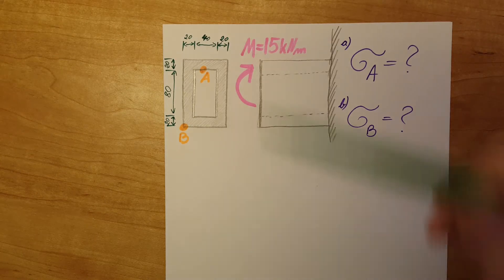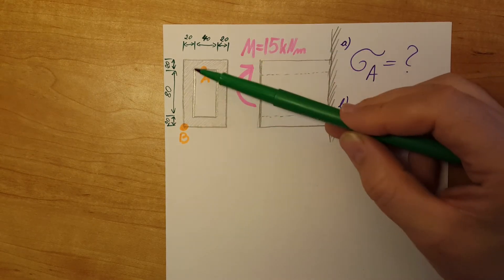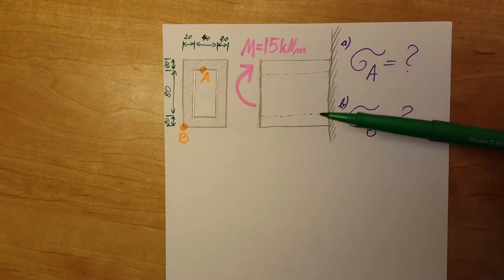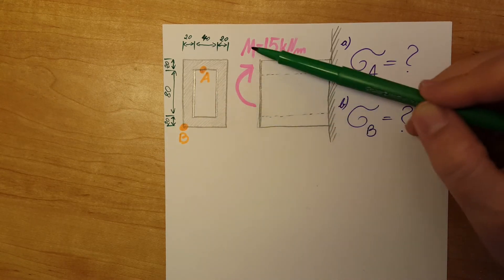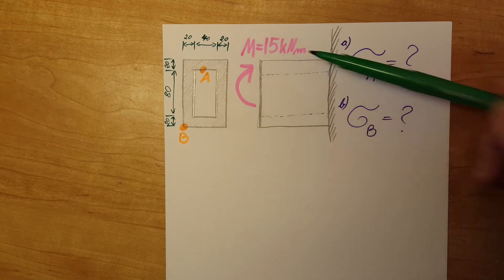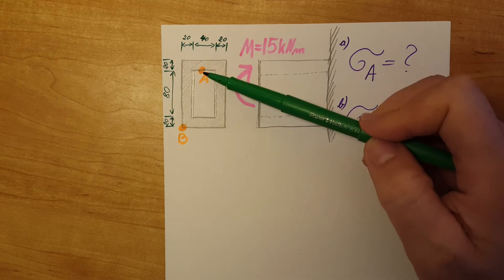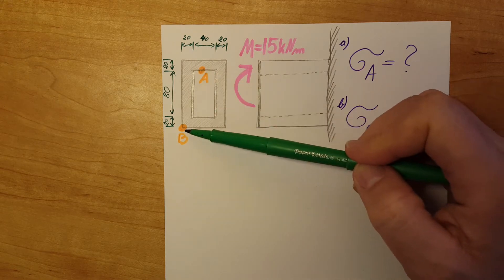We have a bending problem. Here we are working with a rectangular shape with a hollow interior. We have a moment, a couple given, which is 15 kilonewton meters, and they want us to determine the stress at point A and the stress at point B.